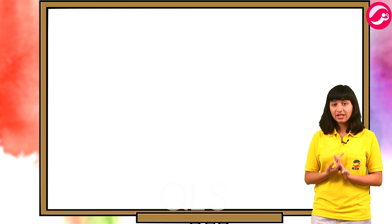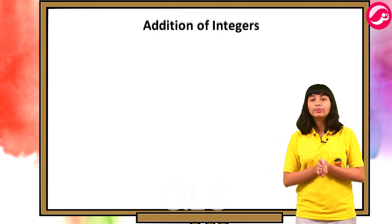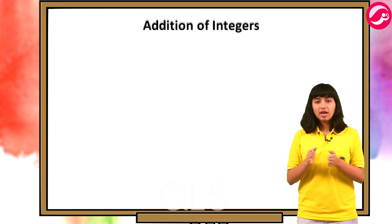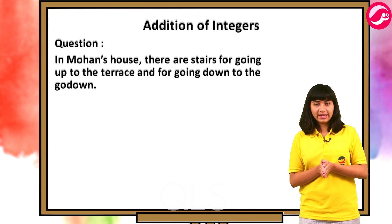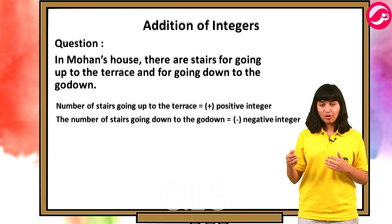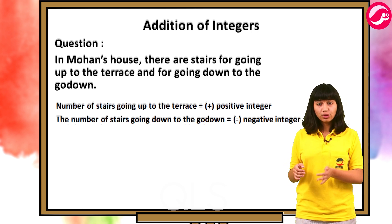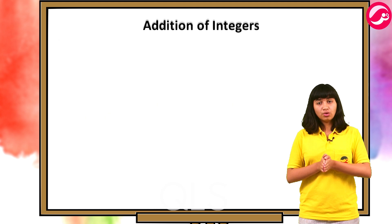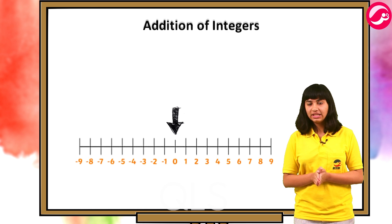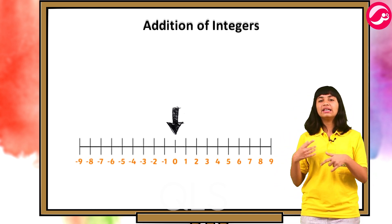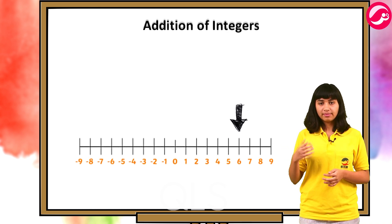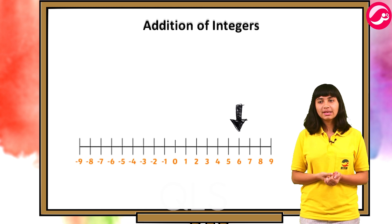Now let's move to our next topic: addition of integers. This is very important and many questions will come from this. In Mohan's house there are stairs for going up to the terrace and for going down. The number of stairs going up is positive and the number of stairs going down is negative. Ground level will be zero. Now we represent the following as integers: go six steps from the ground above — plus six.